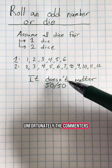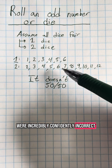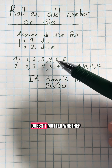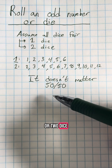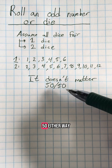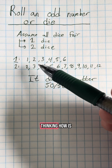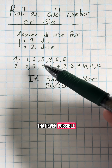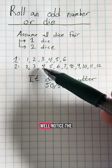Unfortunately the commenters were incredibly confidently incorrect, because it actually doesn't matter whether you roll one or two dice — the odds of rolling an odd number are going to be 50/50 either way. But if you're thinking how is that even possible when there are fewer possible odd numbers here...